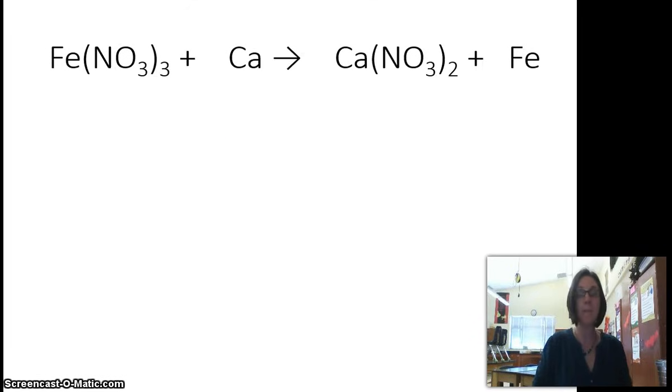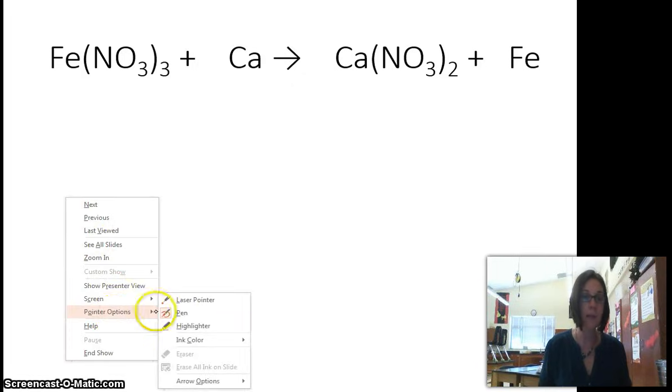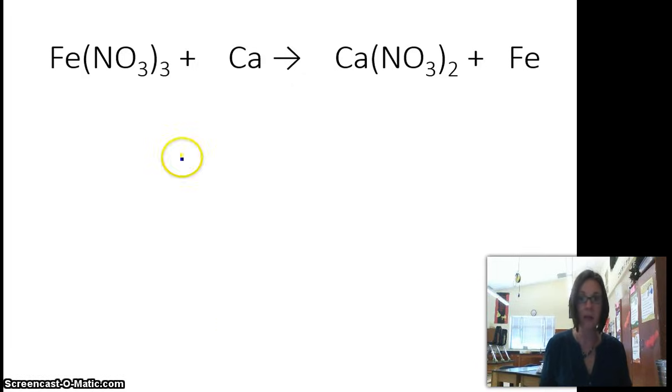So here's an example of a more complicated chemical equation that we need to balance. So if you notice, we've got some parentheses. We've got some polyatomic ions in there. What I recommend you do, at least in the beginning, is get a highlighter and go through that equation and highlight the polyatomic ions. So here's NO3, here's nitrate. I'm going to find it on the product side. Here's nitrate. I'm going to highlight it again.